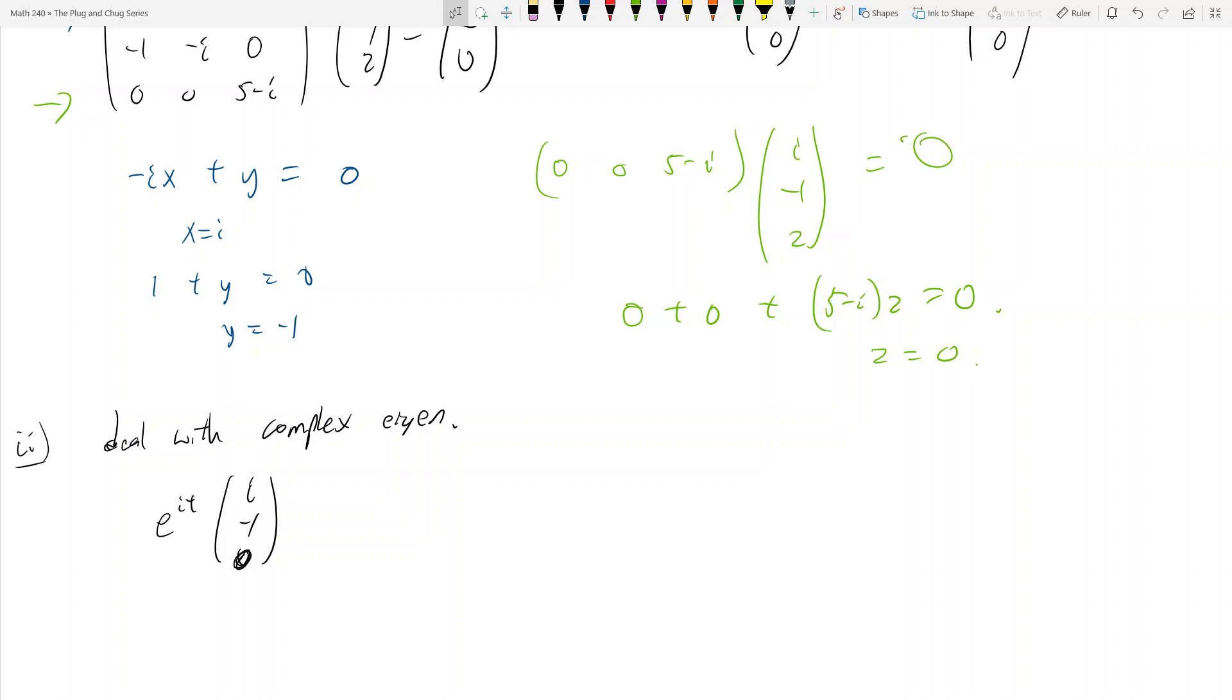And what do I mean by factor both? I mean that I want to split it up into real parts and imaginary parts. So e to the it, right, is equal to cosine t plus i sine t, right? This is what e to the it is equal to. So this is e to the it.